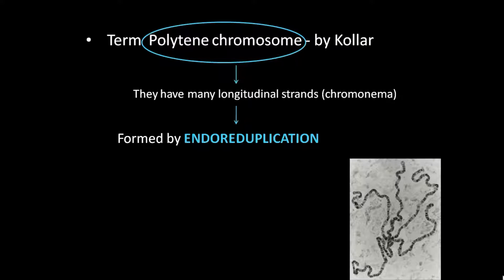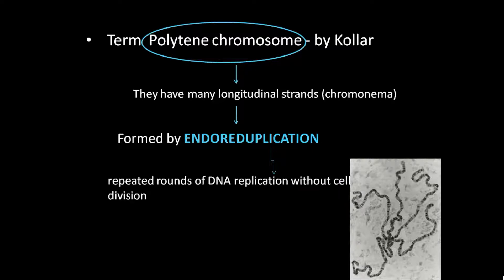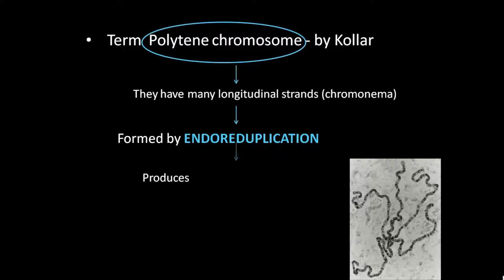However, in this case, the S phase (DNA synthesis) occurs but the M phase mitosis is skipped. Because of that, there will be repeated cycles of DNA synthesis without cell division. This process — endo-reduplication — involves repeated rounds of DNA replication without cell division, causing the chromosome to become multi-stranded and producing multiple chromatids of each chromosome.